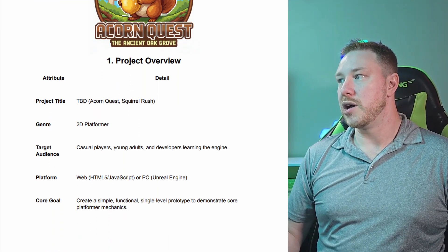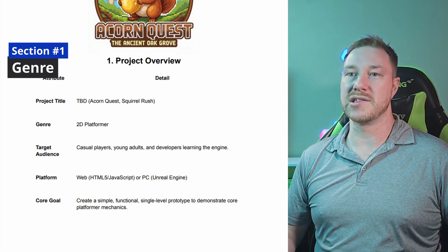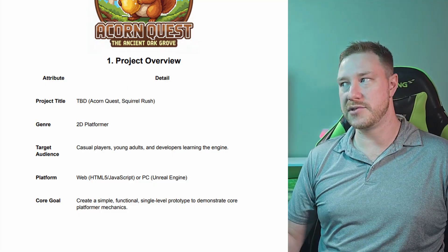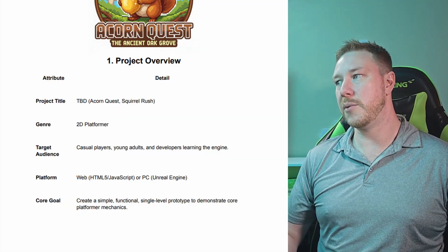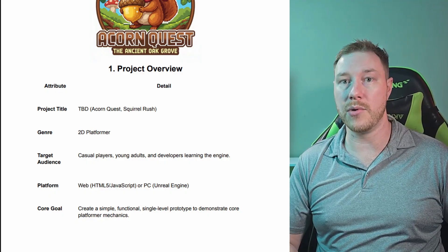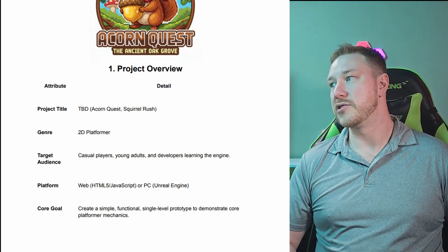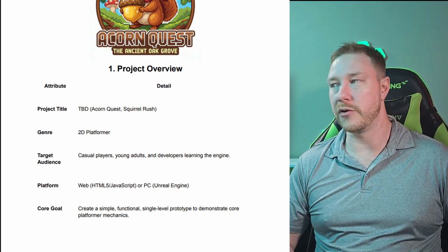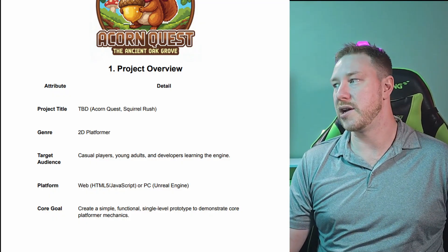Next up we have the genre. This is going to define what your game's genre is and basically outline the whole project and give a bit of a scope, because a 2D platformer is not going to be the same as an RPG or action-adventure. It gives you an idea of what to expect if you're coming in as a team member or investor. Our document specifies the game as a 2D platformer with the main platform as web or PC. Listing the engine options is also helpful for developers — if it's Unreal Engine or Unity and they're not familiar with that engine, maybe they wouldn't be a good fit for the team.